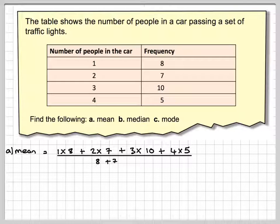And then we need to divide by the total frequency. So it's going to be 8 plus 7, plus 10, plus 5. The bottom bit here tells me the total number of cars I have, and this will tell me the total number of people.